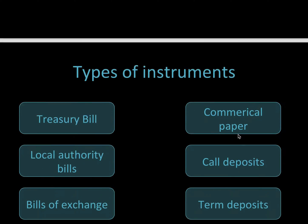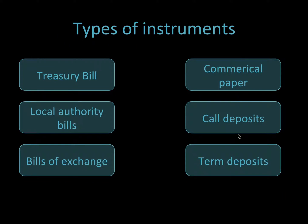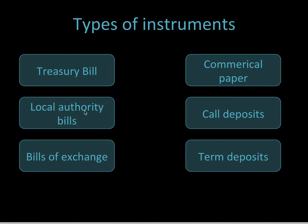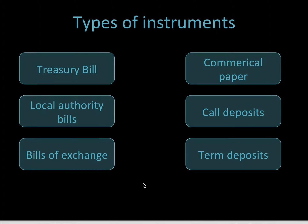What are the types of instruments? There are treasury bills, local authority bills, bills of exchange, commercial paper, call deposits, and term deposits. In CA1, you need to know the pros, cons, and full characteristics of all six types of instruments.